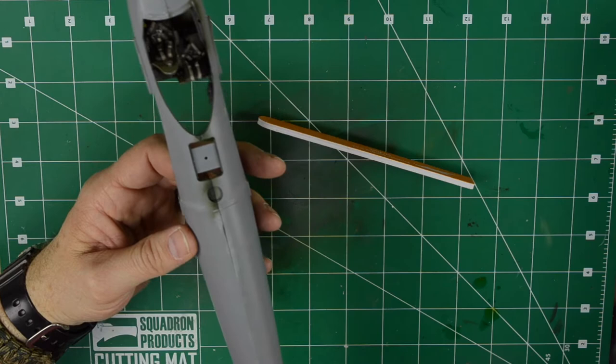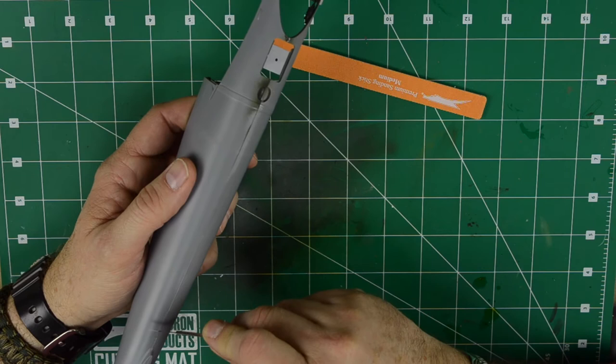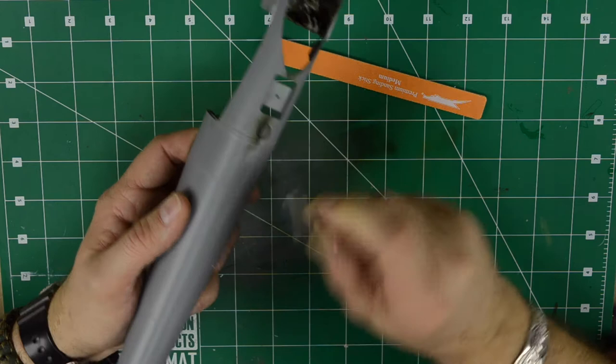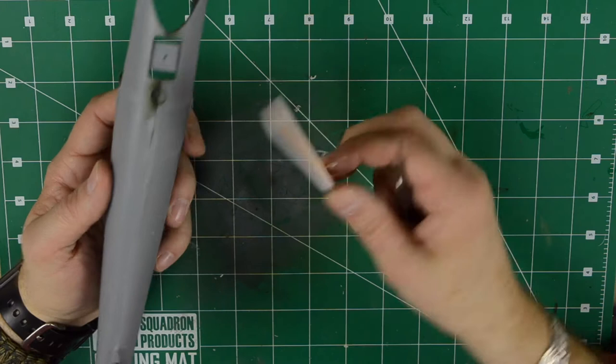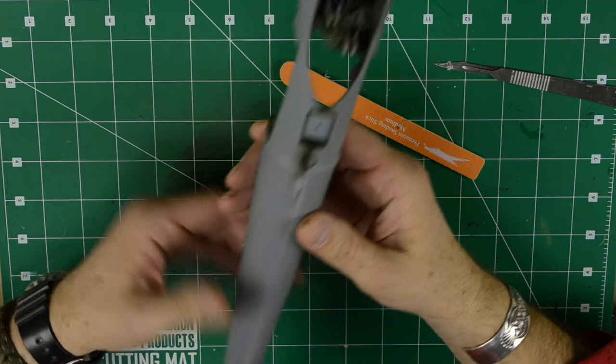Now, many of you will know if you have some major differences between the two fuselage halves, when one half sticks up a little bit more than the other, there is always the scraping method, which removes a lot more plastic than you do with the sanding stick. But like I said before, the Tamiya Mosquito doesn't really need this.